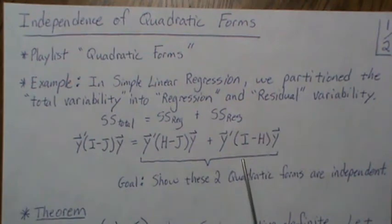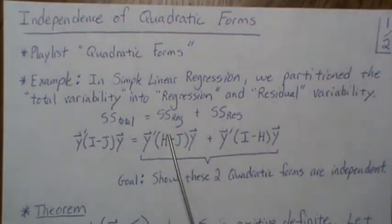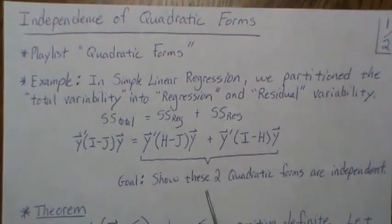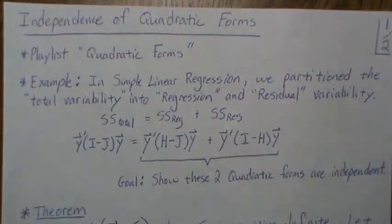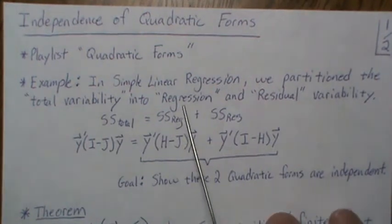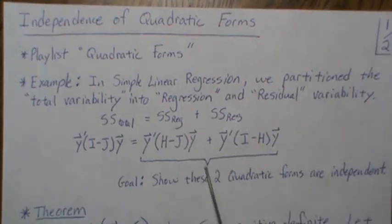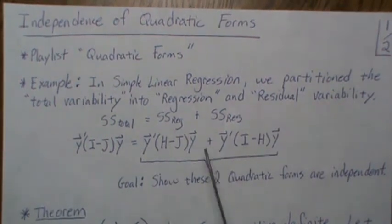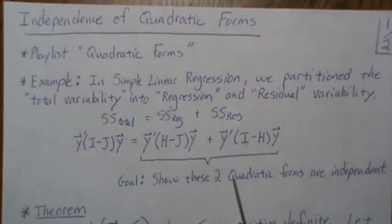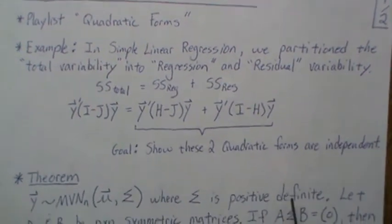We want to develop a test statistic, but I need to show that these two quadratic forms are independent. I didn't have a video on it, so that's what we're going to do here. I was very vague about this example, but you can go to my playlist General Linear Models 1 and watch the development. So for this video, the theorem is this.